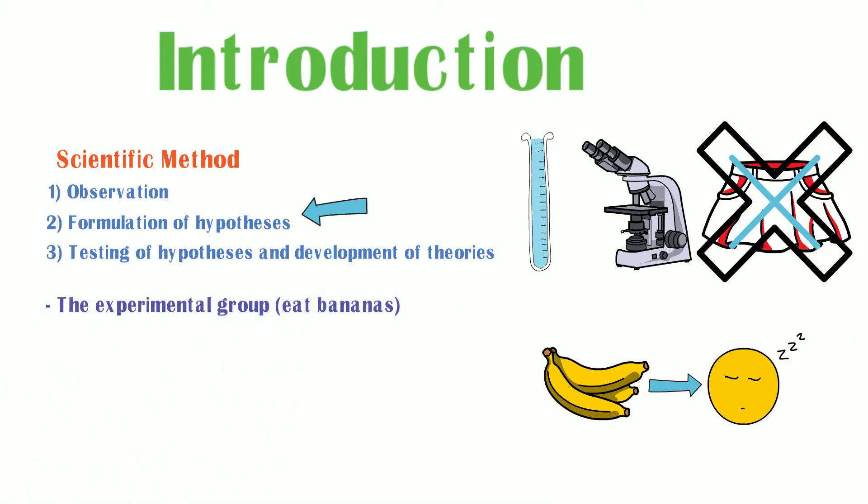The first one is the experimental group, the one in which a change is made. In this case, they will eat bananas before bed, the poor wretches.